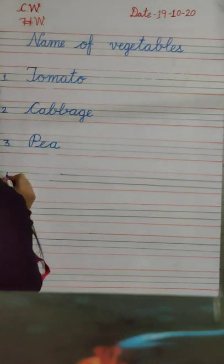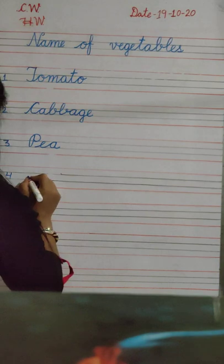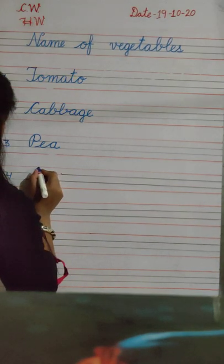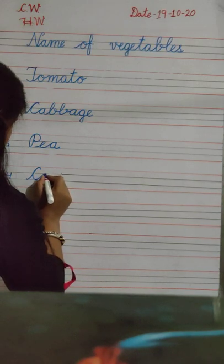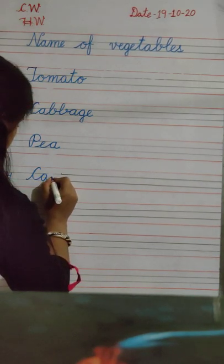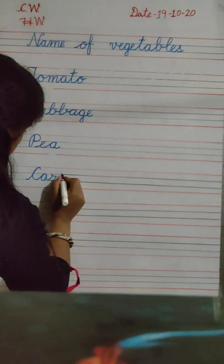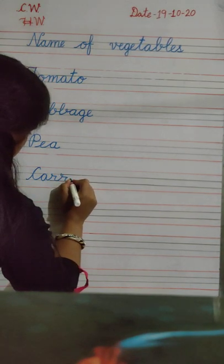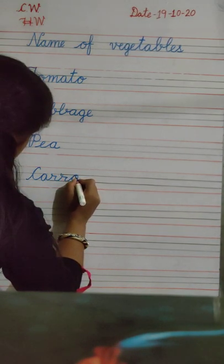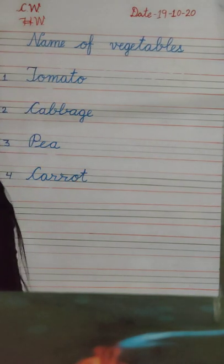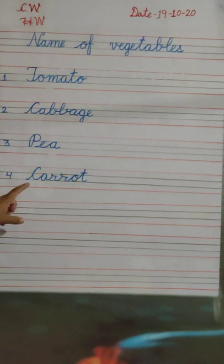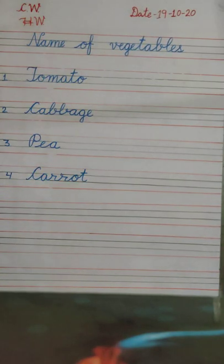Next, number 4. C, A, double R, O, T. Carrot. C, A, double R, O, T. Carrot. Okay?